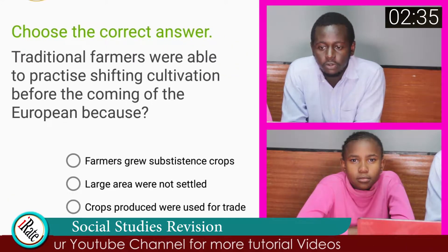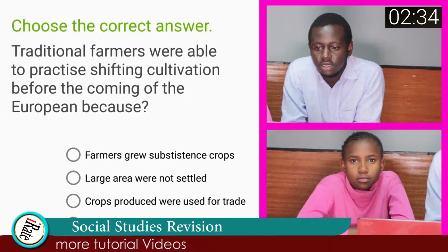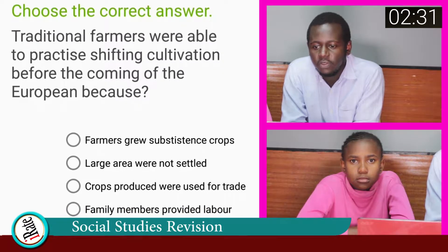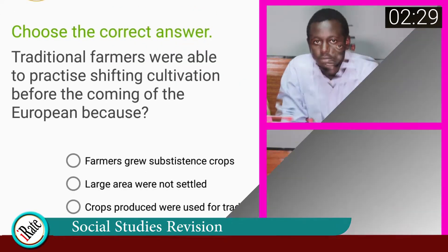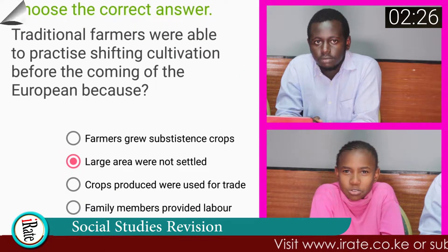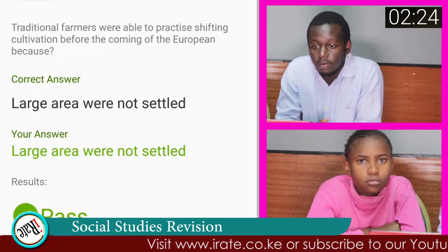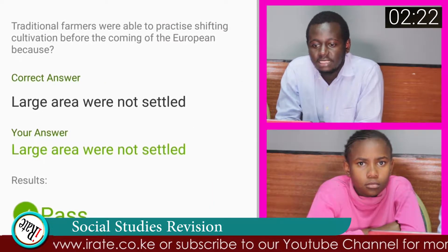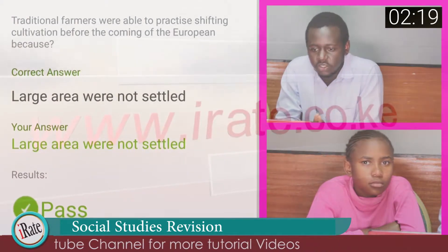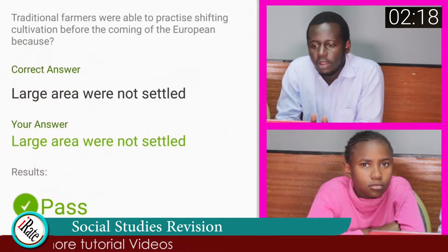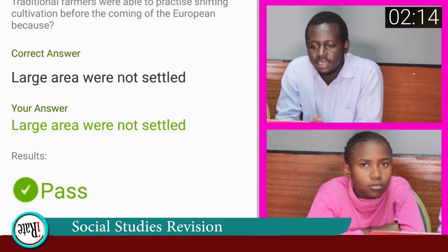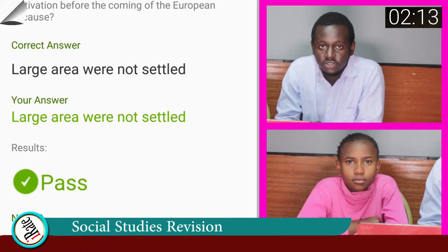Question number four: Traditional farmers were able to practice shifting cultivation before the coming of the Europeans because? The correct answer is that a large area was not settled. Shifting cultivation is a type of cultivation where people plant in one area and then move on to another area in the next cultivation season.